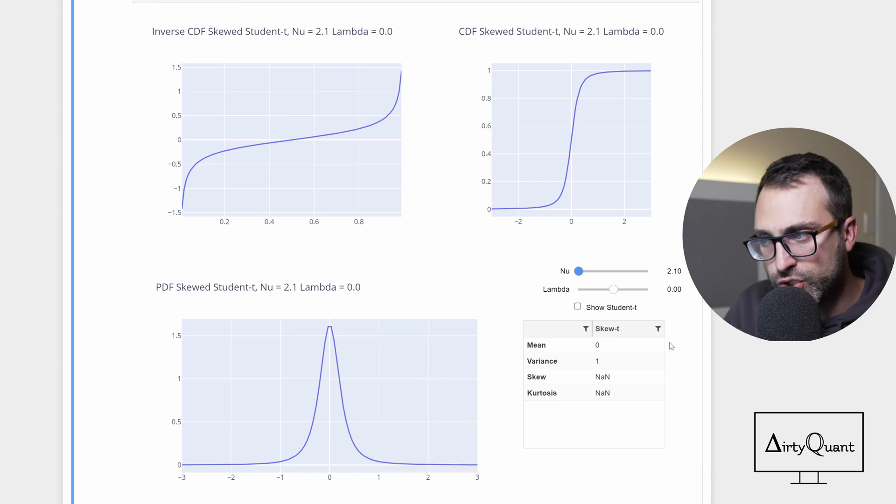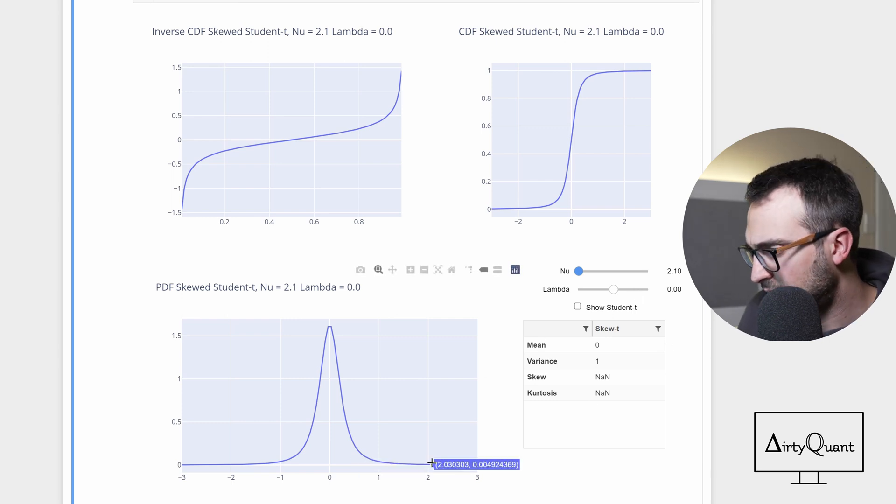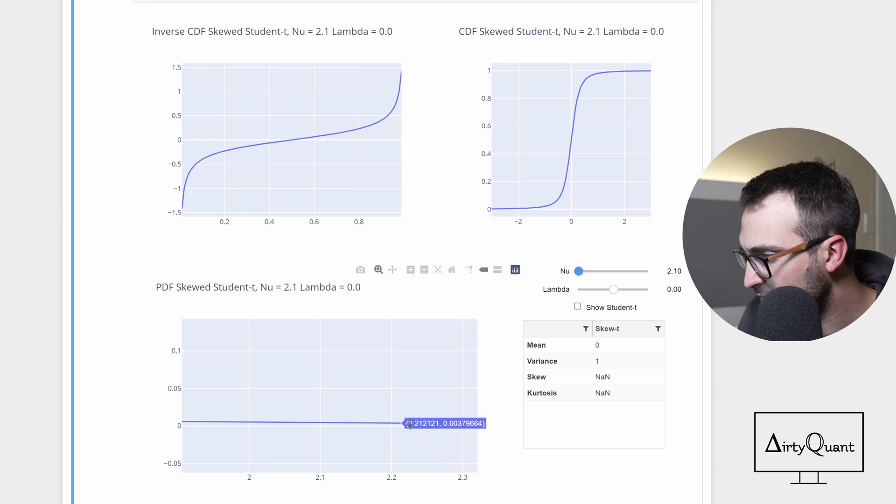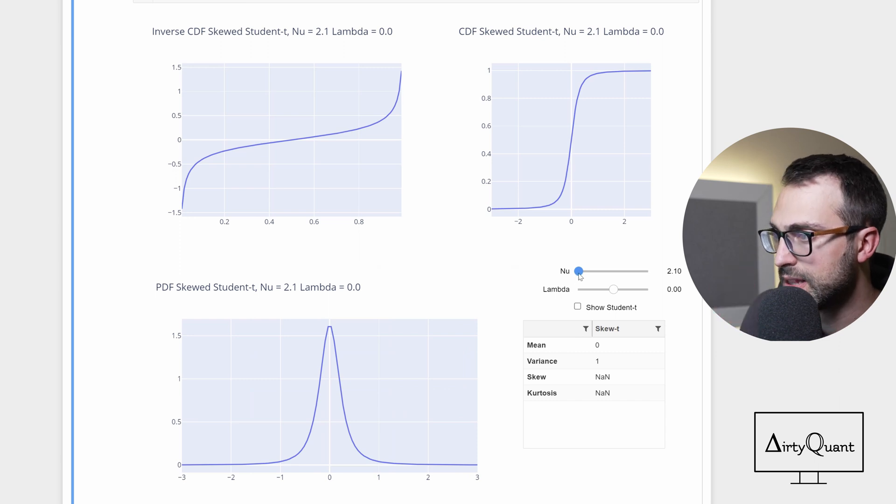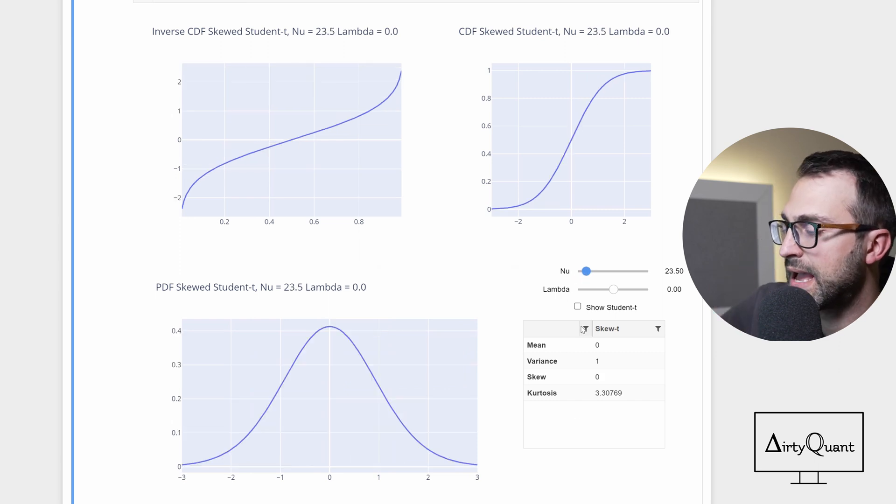Essentially, what we've done by reducing that degrees of freedom, it might not appear, but there's actually more area here that things are more likely to happen in these tails. So if I bring this up a little bit, right.